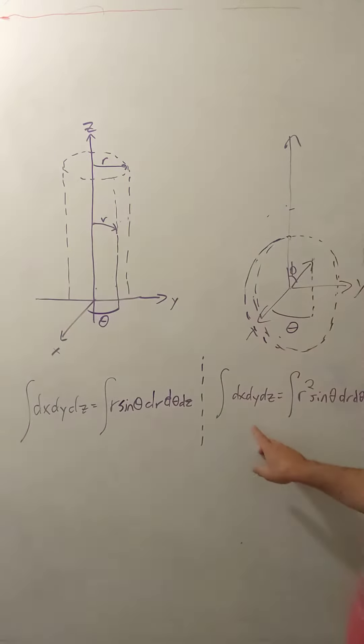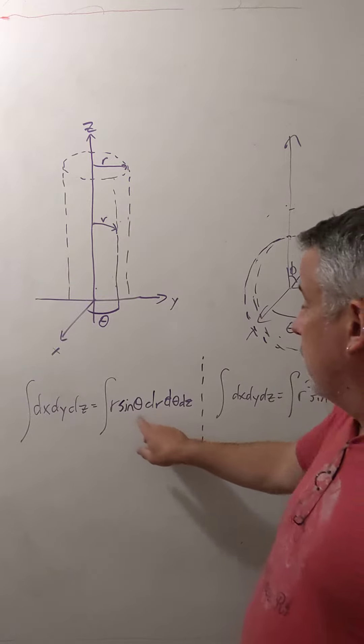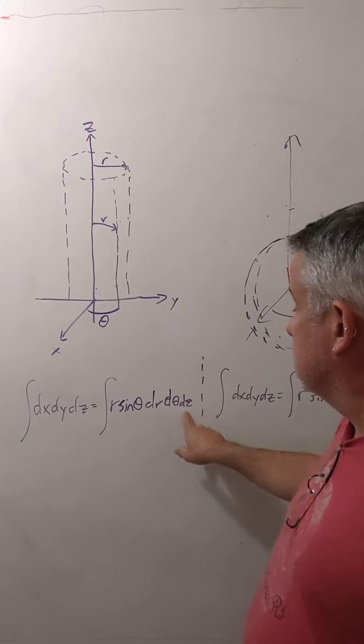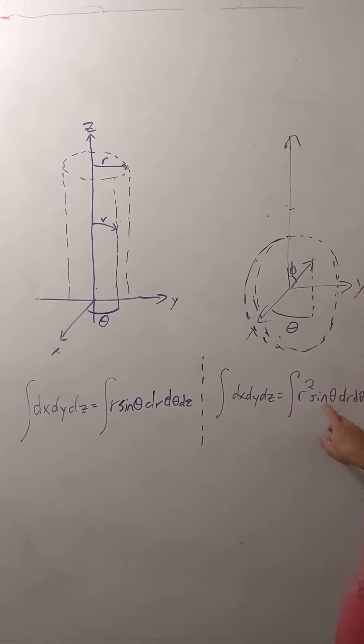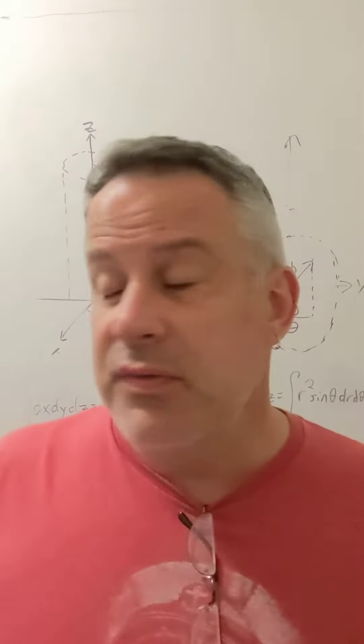If you want to do the same thing in terms of spherical coordinates, you need the Jacobian factor, which is r squared sine theta. And so notice this is r sine theta dr dtheta dz, and here it's r squared sine theta dr dtheta dphi. And so these two coordinate systems are pretty useful.